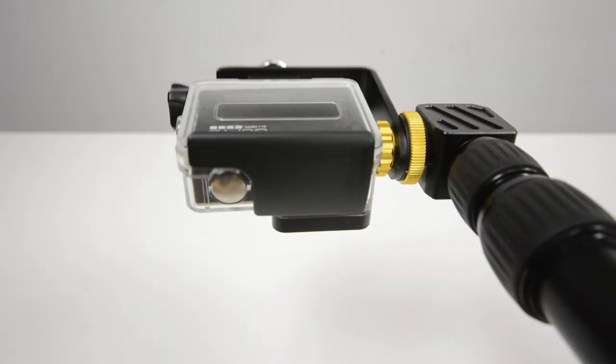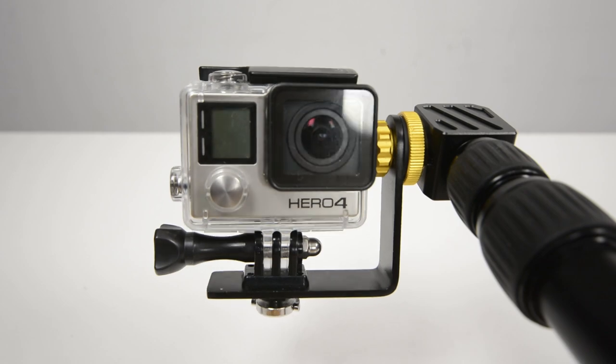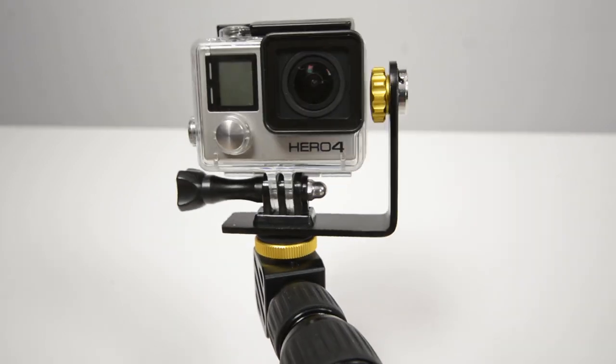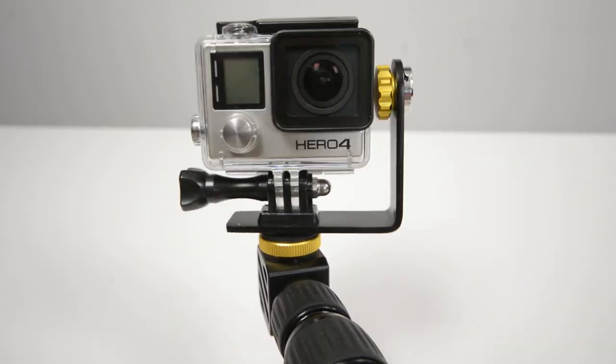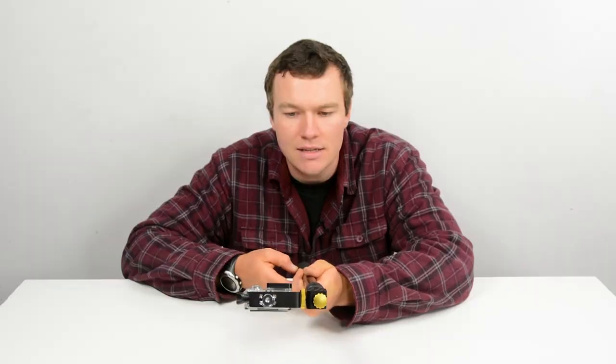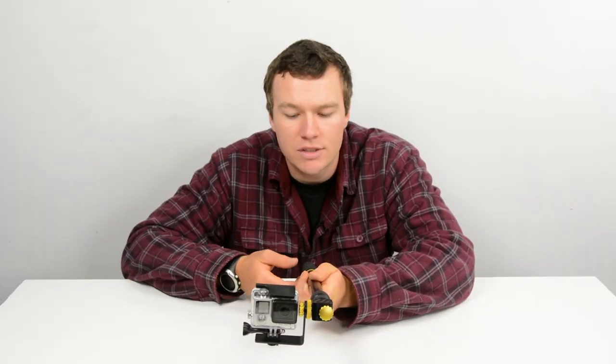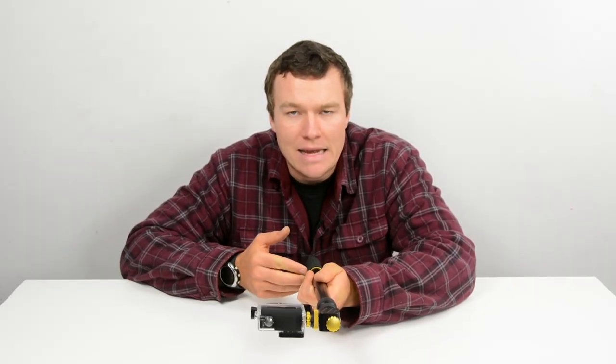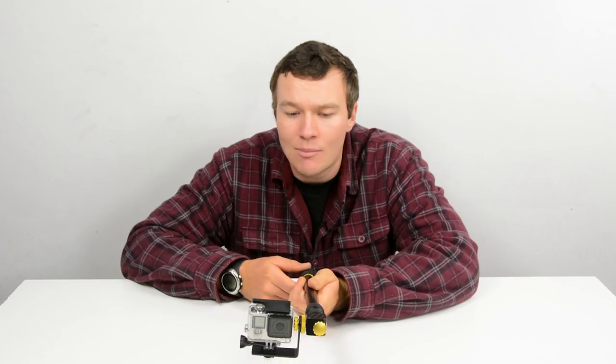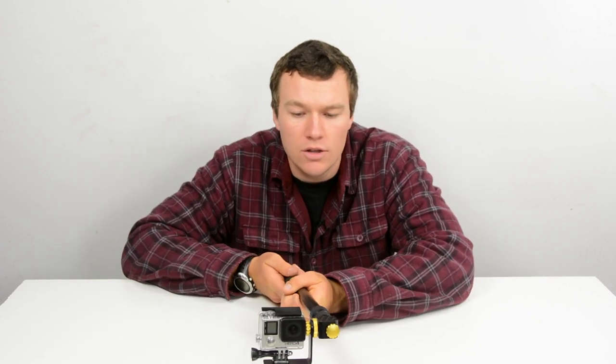But if you unlock this front nut, you get the real benefits of the pole, and that's the ability to tilt. In this case, by holding the pole steady and rotating the handle. Now this is two-handed operation - if you're going to use this pole single-handedly, you're not going to take advantage of this pan and tilt functionality.